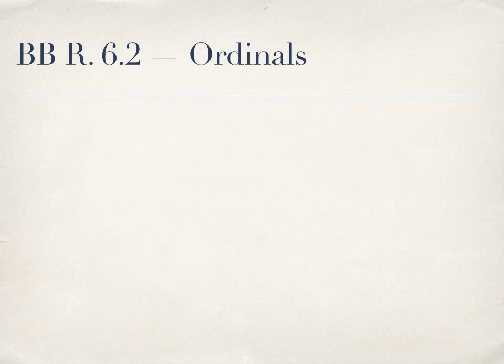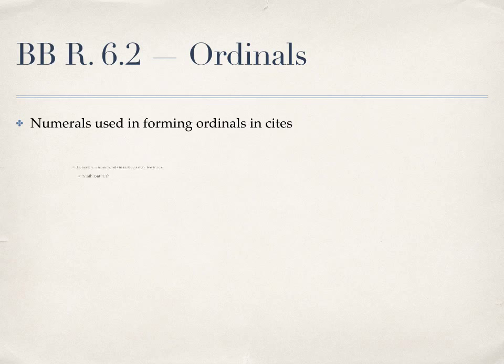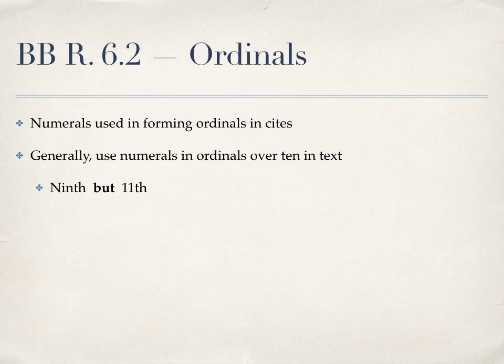So when should you use ordinals, and how should you format them? First, we're going to use numerals in our ordinals in citations. This rule is already familiar to you, as you've used ordinals to indicate the second or third series in your reporter abbreviations. Similarly, you've abbreviated the Federal Circuits by their ordinals in your citations. And in textual sentences, you should use numerals when indicating ordinals over the tenth. Therefore, you would spell out ninth as a word, but use the number 11 followed by th to indicate the eleventh.